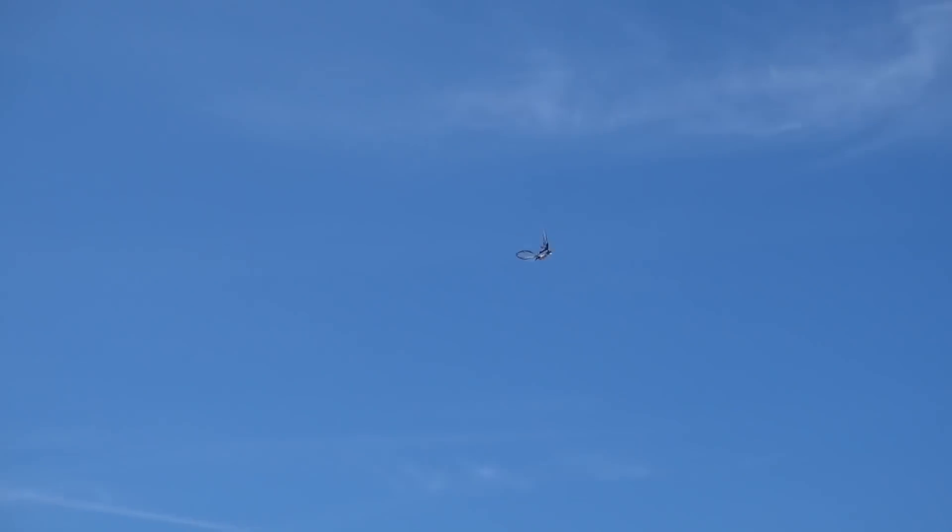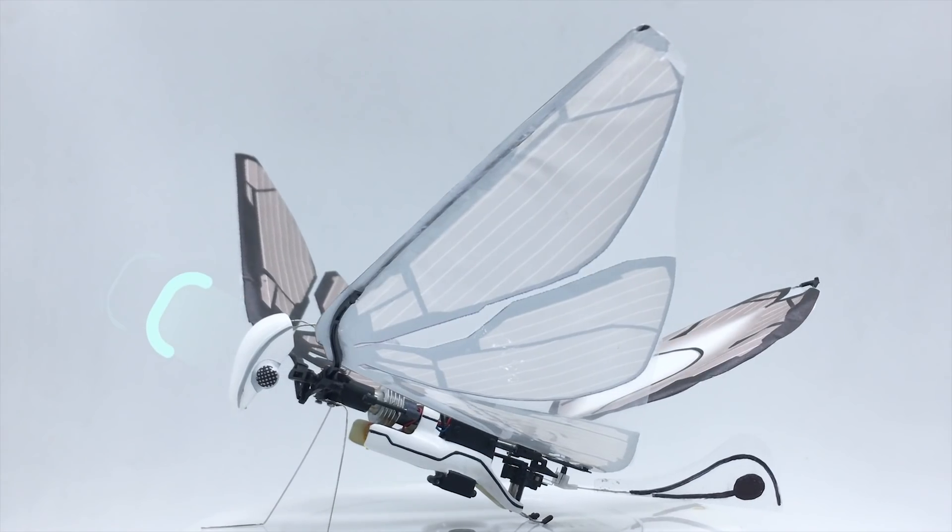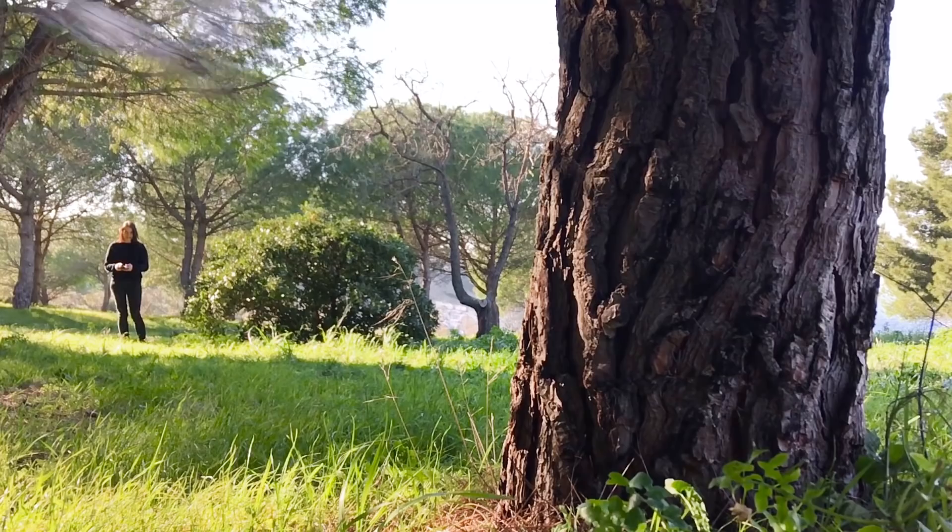Oh, and don't worry about crashing. MetaFly has elastic wings and legs in addition to both front and back bumpers to protect its body. Take that tree.